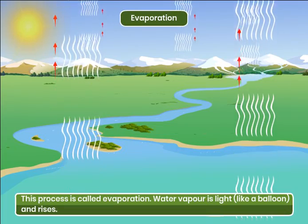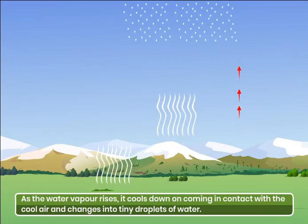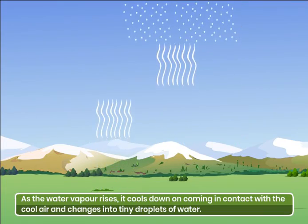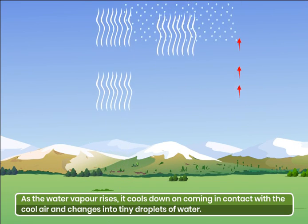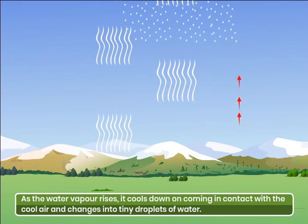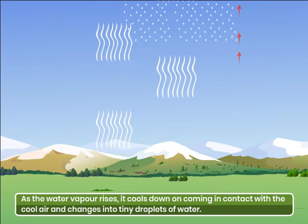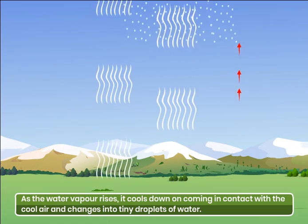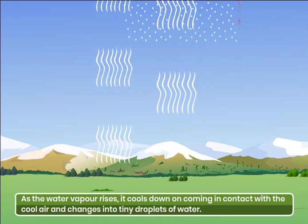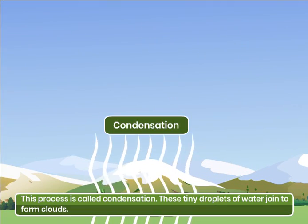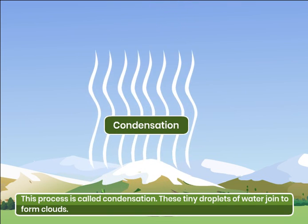Water vapor is light, like a balloon, and rises. As the water vapor rises, it cools down on coming in contact with the cool air and changes into tiny droplets of water. This process is called condensation.